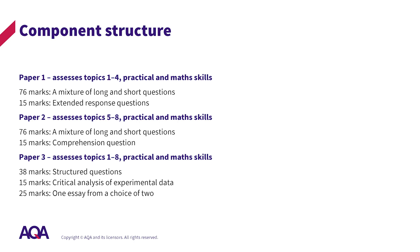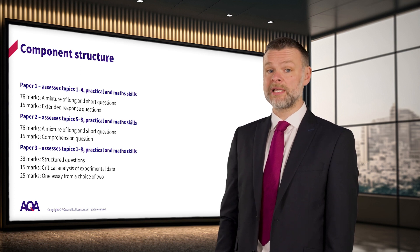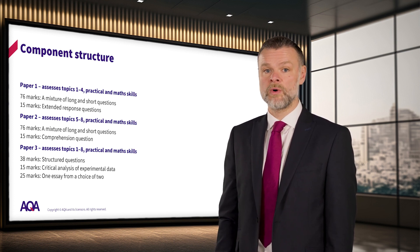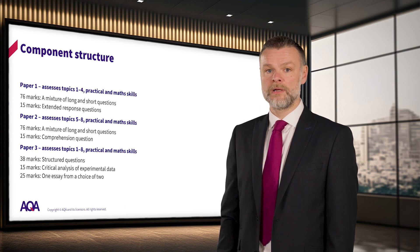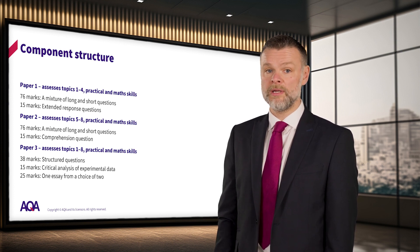Paper 3 is a synoptic paper and can assess any of the eight topics of the specification in three broad sections. The first 38 marks are a mixture of long and short questions. The penultimate question is worth 15 marks in total and includes critical analysis of experimental data, and the final question is a 25 mark essay in which students write one essay from a choice of two titles. It's worth noting that the essay contains 13 marks of AO1 and 12 marks of AO2. What this means for paper 3 is that the rest of the paper will have a higher proportion of AO3 questions when compared with paper 1 and paper 2.